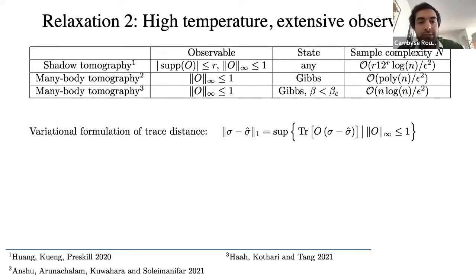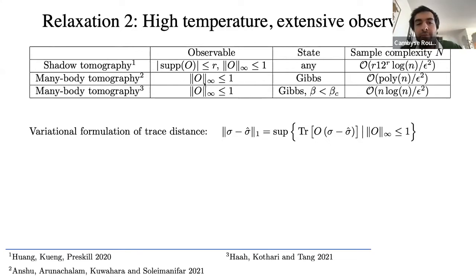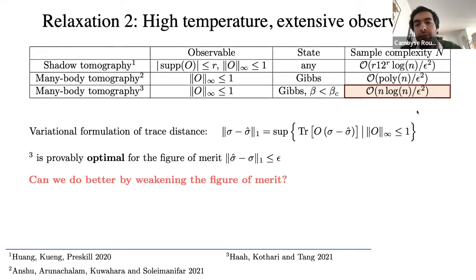To summarize: shadow tomography approximates observables supported on regions of small size r for any state, with sample complexity logarithmic in n but exponential in r. Many-body tomography recovers any bounded observable assuming a Gibbs structure, with sample complexity polynomial in n but with no restriction on region size. More recently, for high-temperature Gibbs states, the sample complexity improves to O(n log n), and this dependence is essentially optimal for the trace-distance figure of merit.